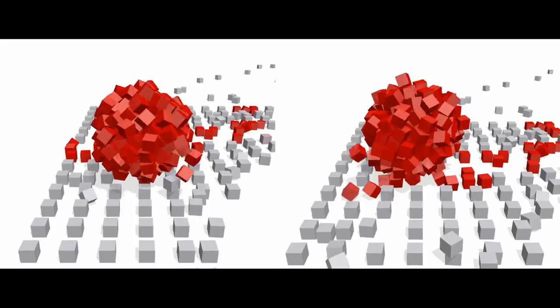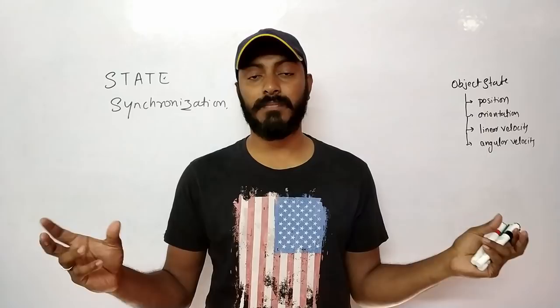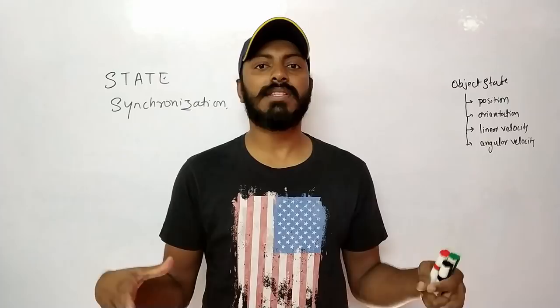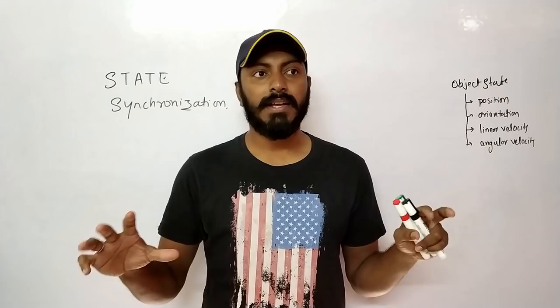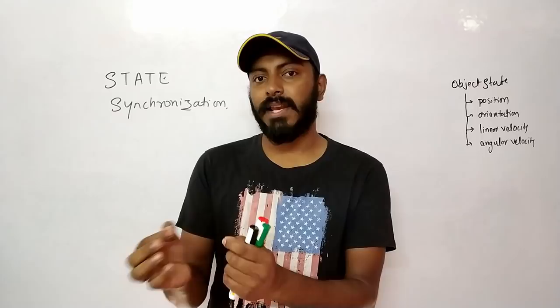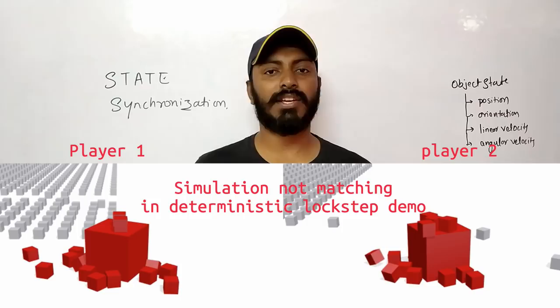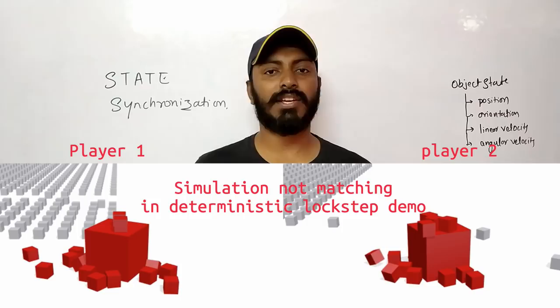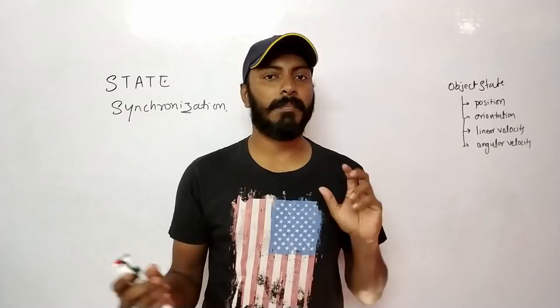So far we've learned deterministic lockstep, which works but has one major problem: the inputs from player one and player two must be perfectly synchronized. If we mess up the timing or syncing at any given frame, the total simulation will diverge and never match between player one and player two again — even delaying by a couple of milliseconds throws off the entire environment simulation. As shown in the demo image, the cubes on player one's and player two's scenes don't match because they're slightly out of arrangement.